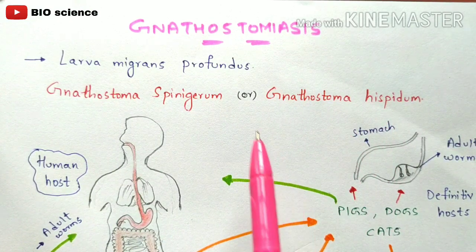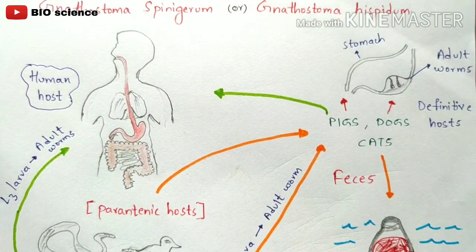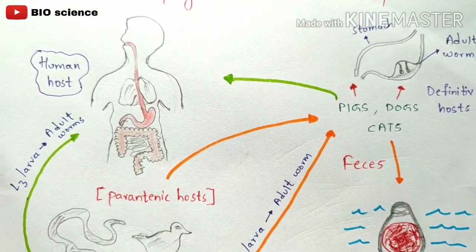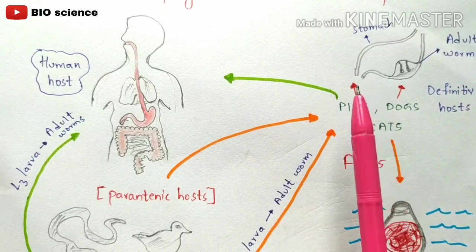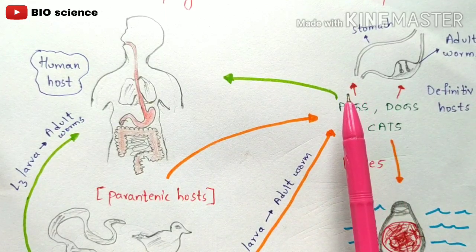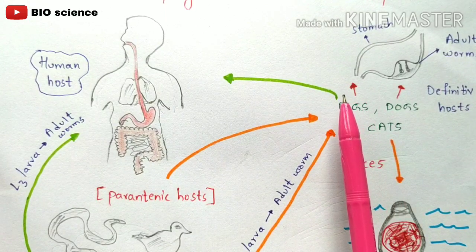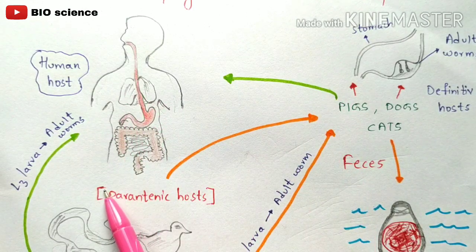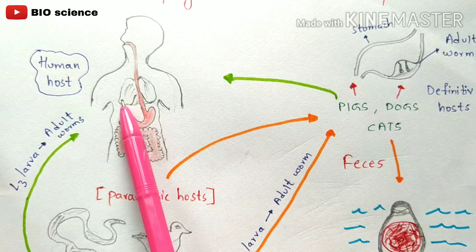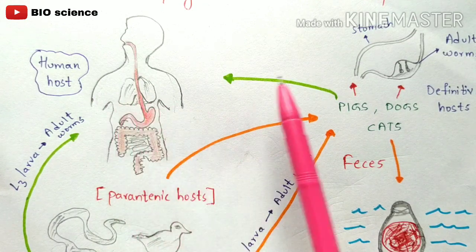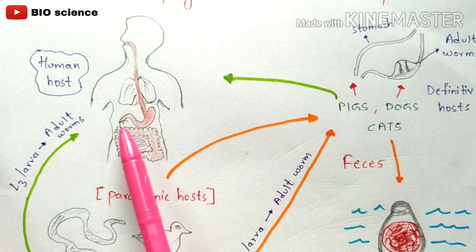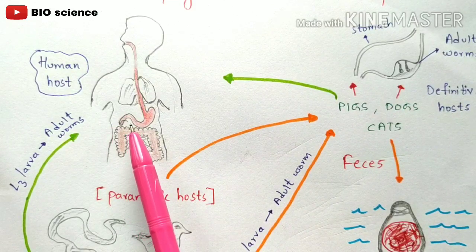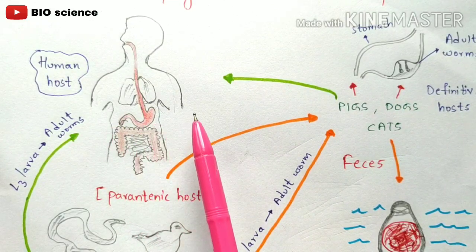I am going to explain the life cycle of this parasite which causes the disease called Gnathostomiasis. In this life cycle there are totally five hosts involved, such that it causes damage to the human body. Among those hosts, the human host is also one of them. We will cover what those hosts are and how the infection causes damage to the human body, all in detail.